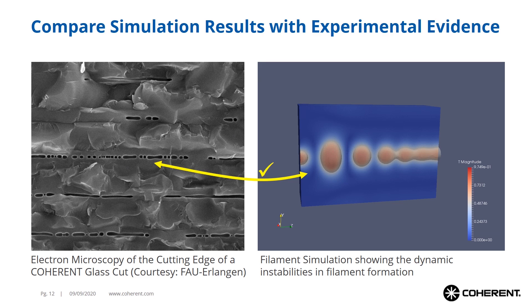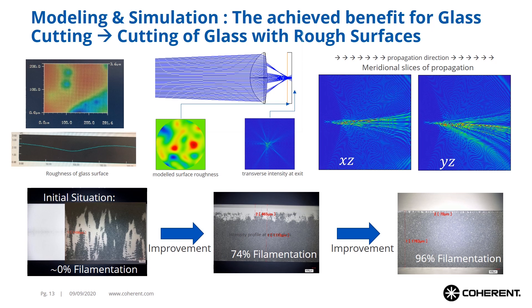The fine structure of the filamentation can be simulated as well. Although some of the structure visible in the SEM image is due to the uneven fracture surface cutting a perfect cylinder at different radius positions, there are optical effects that lead to a pinching of the radiation field. This represents a success story for simulation-based process development: we achieved cutting glass with rough entry surfaces — for example drawn glass — which usually makes filamentation cutting difficult. We found the filament was disintegrating shortly after entry, but with successive improvements of optical measures, we overcame that problem almost completely, leading us to apply for a patent.